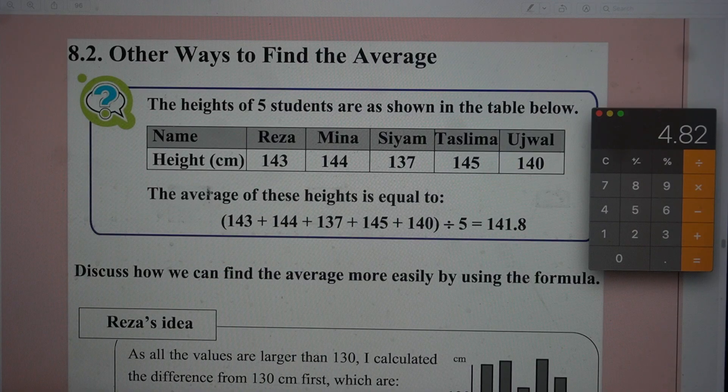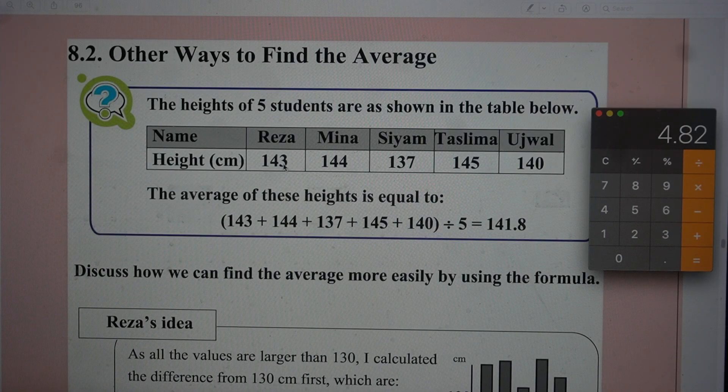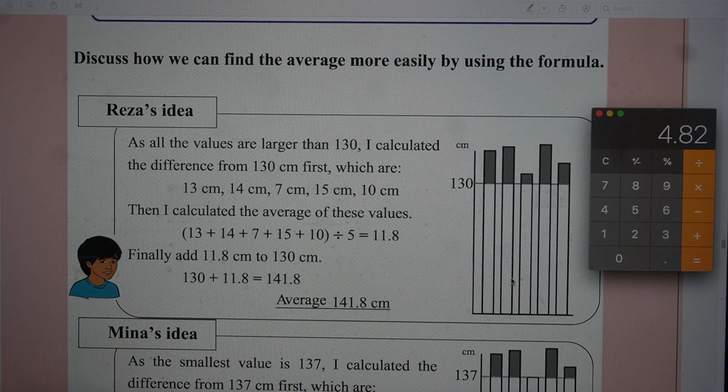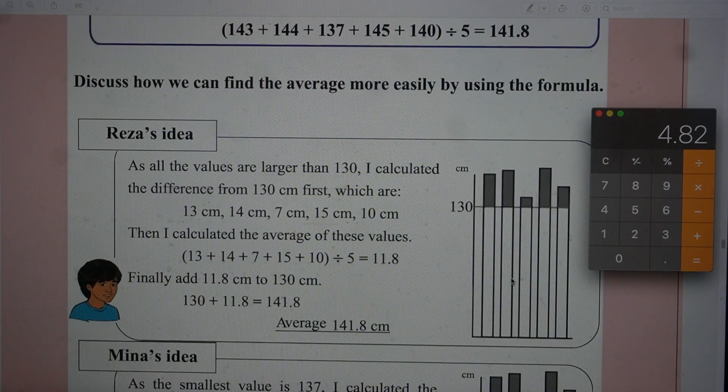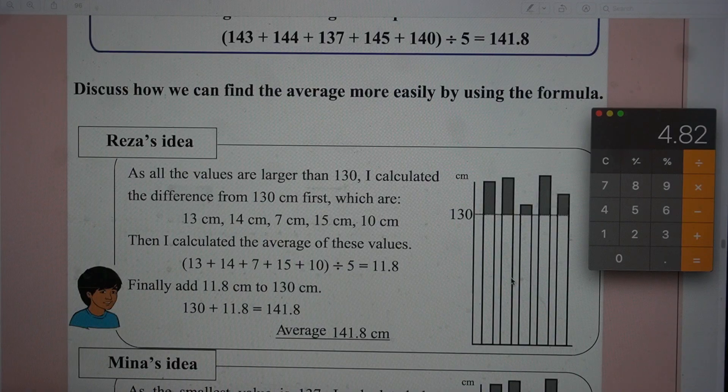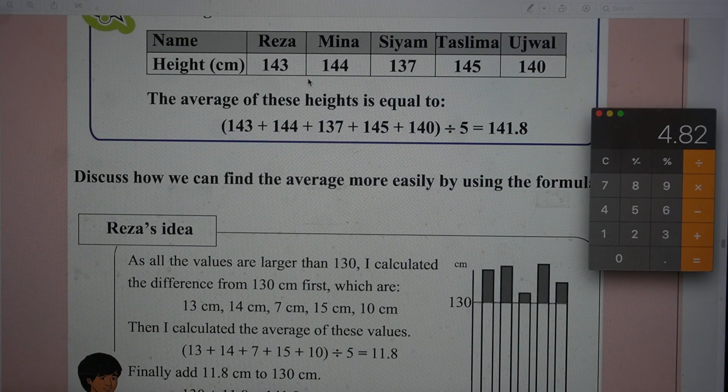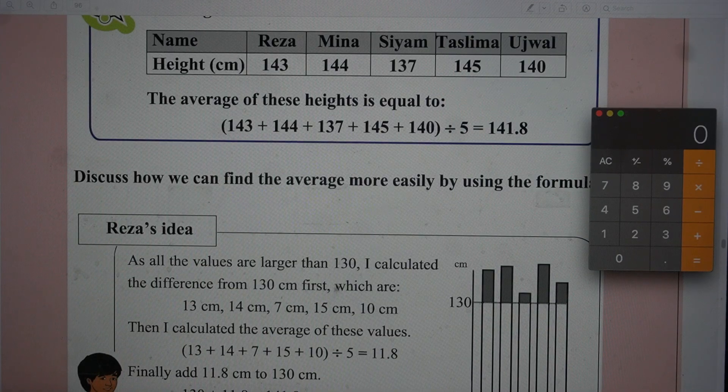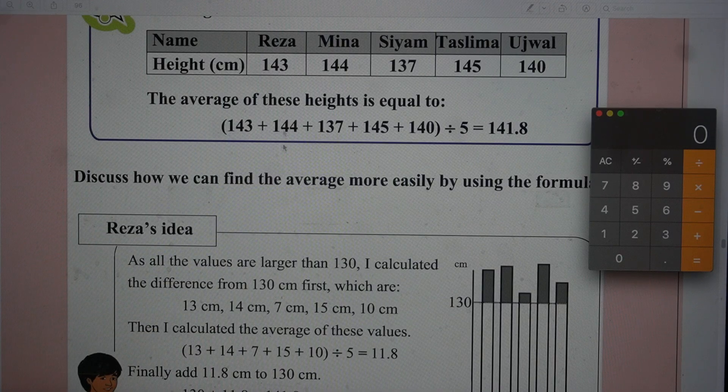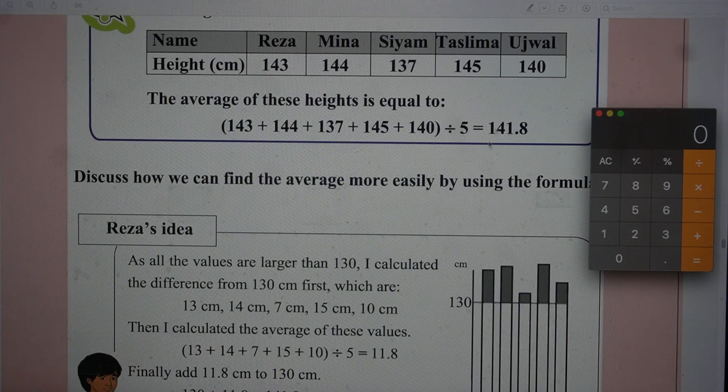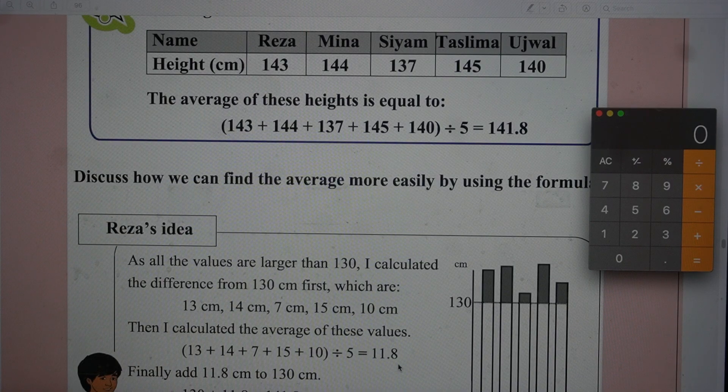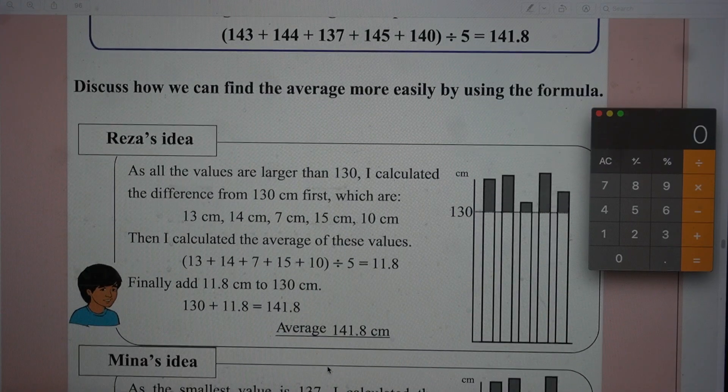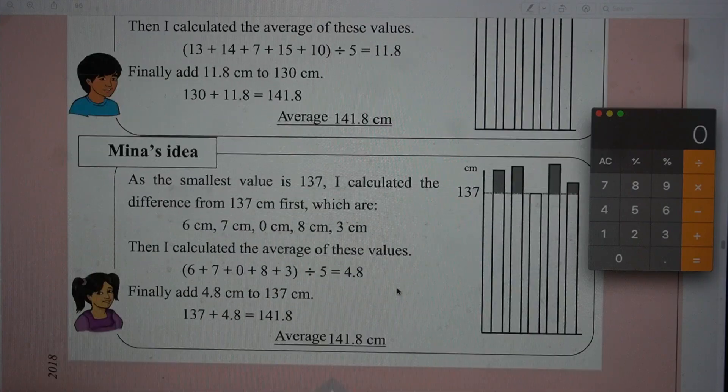Other ways to find average. The heights of 5 students are given below. Average height is the sum of them divided by 5. There is another way of doing it. See the heights here: 143, 144, 137, 145, 140. All these numbers are above 130. So you subtract 130 from each number: 13, 14, 7, 15, and 10. Then add them together divided by 5, that gives him 11.8. If you add 130 plus 11.8, you will get the average, 141.8. It is an easier way of doing it.